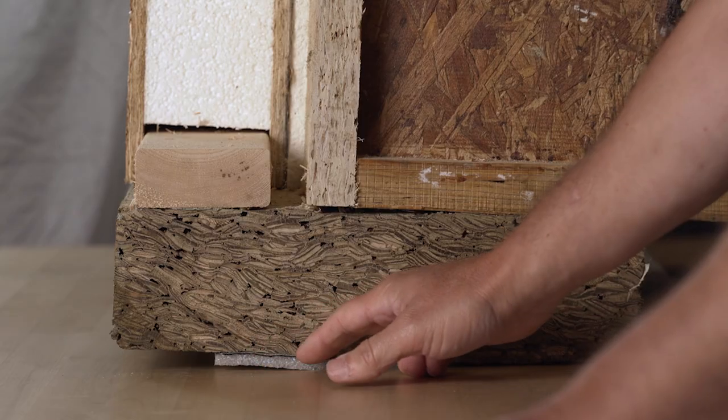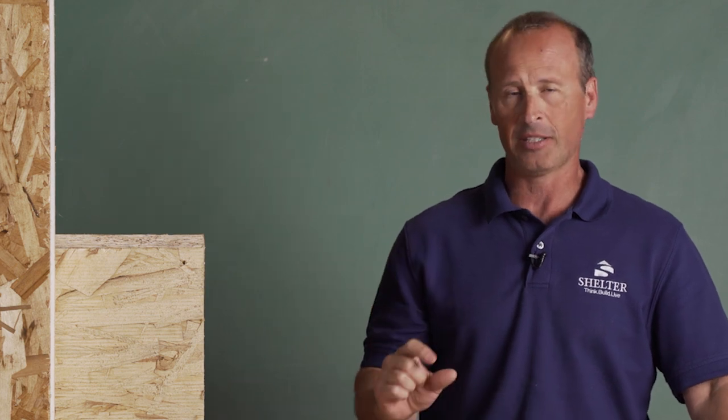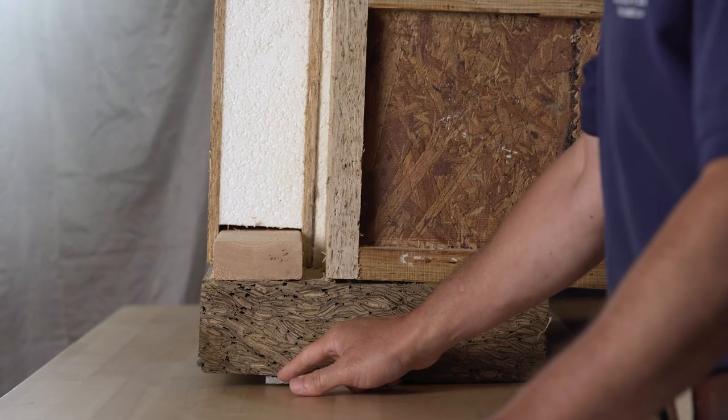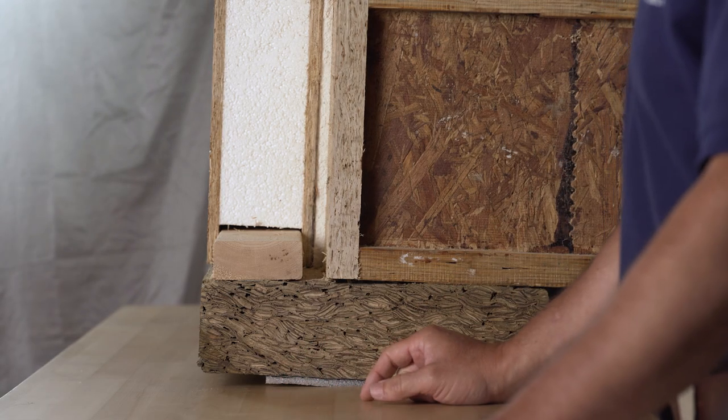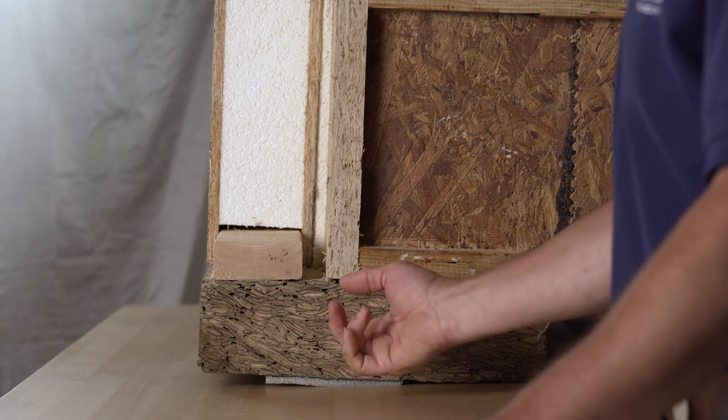This is our favorite sill seal made by Protecto Wrap. Why is it our favorite? Well, it's a particularly thick sill seal so it takes up big irregularities in the top of the wall, but it also has a self-adhesive on one side that allows us to bond it either to the top of the wall or the underside of the sill plate.